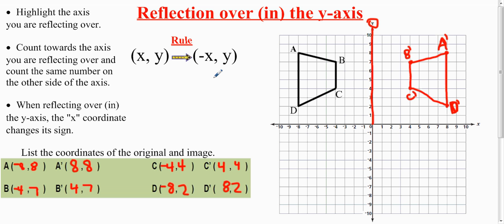That's one way of reflecting over the y-axis: counting the boxes or lines to the axis and then the same amount on the other side. But if you want to remember the rule, when you reflect over the y-axis, the x turns its sign. When you reflect over the y, the x changes.